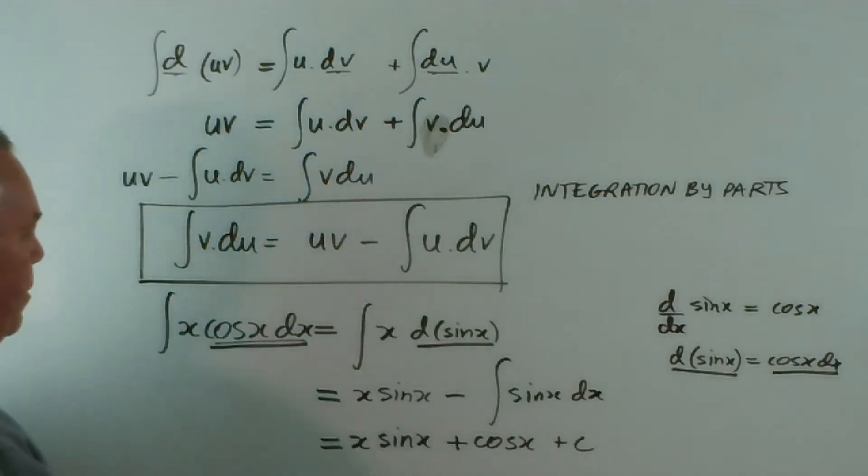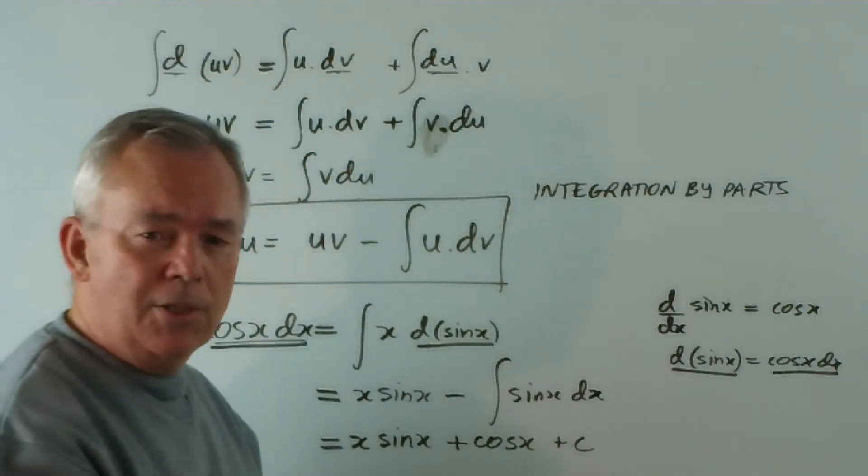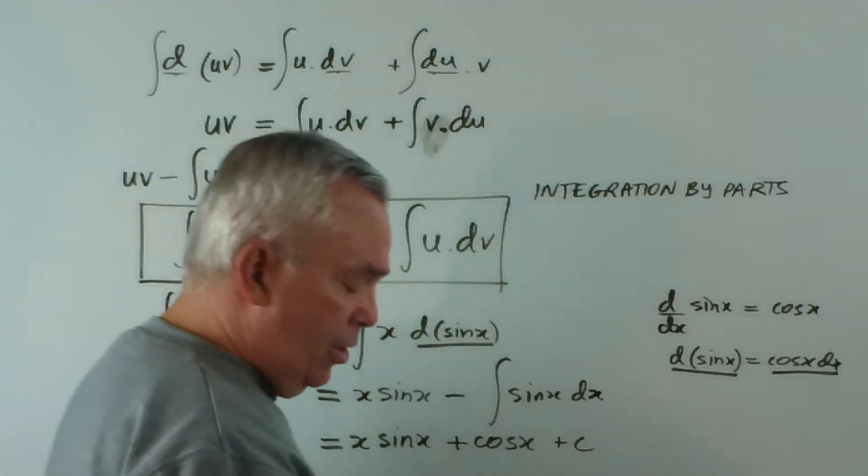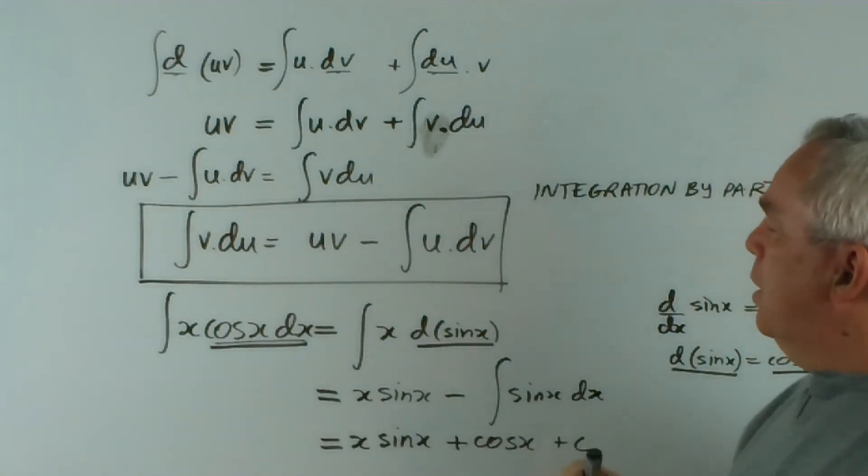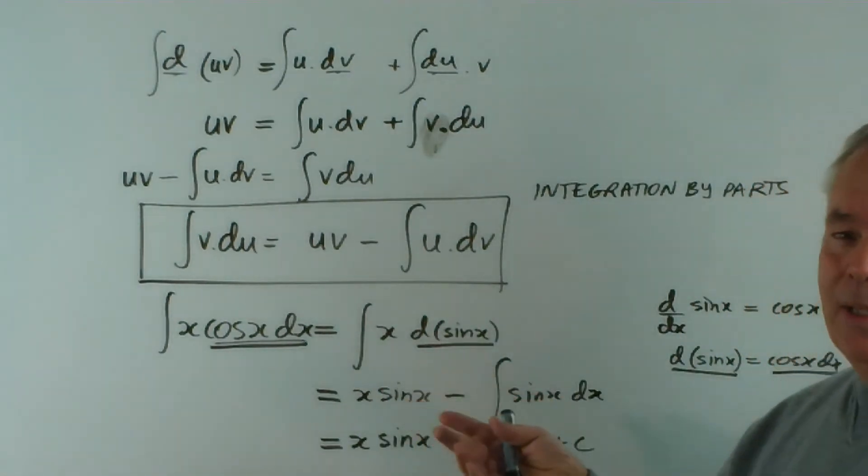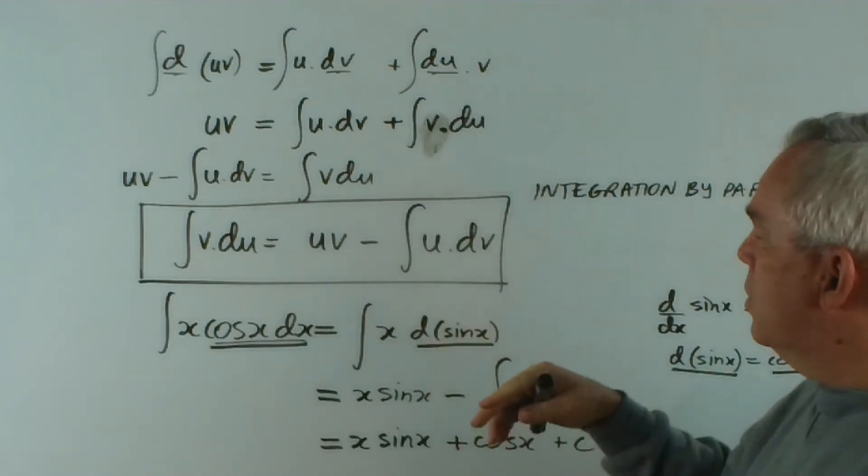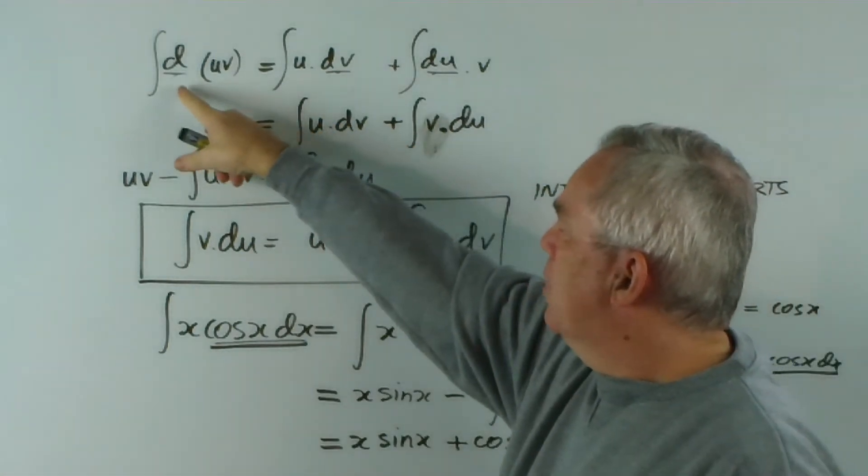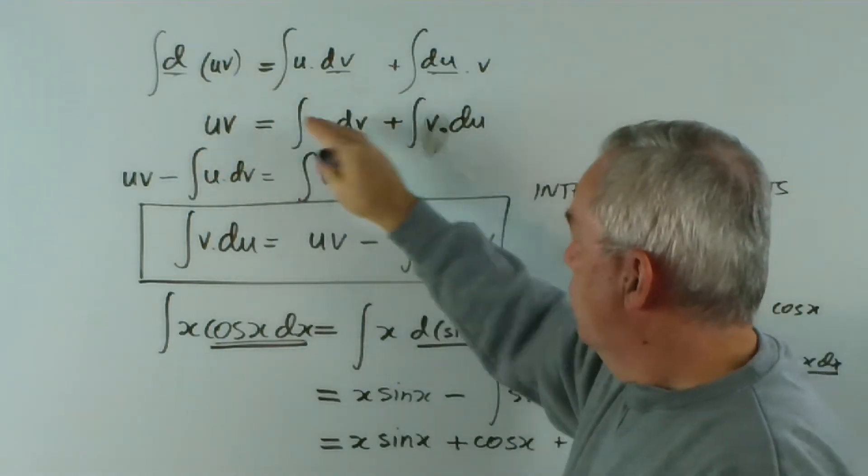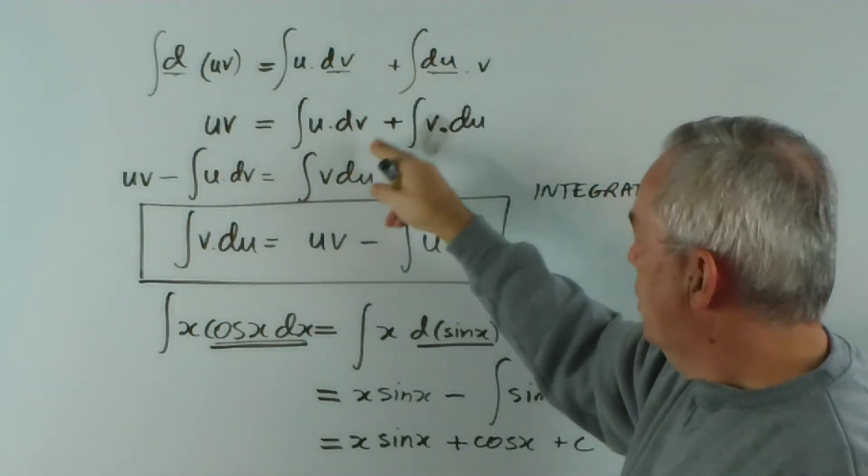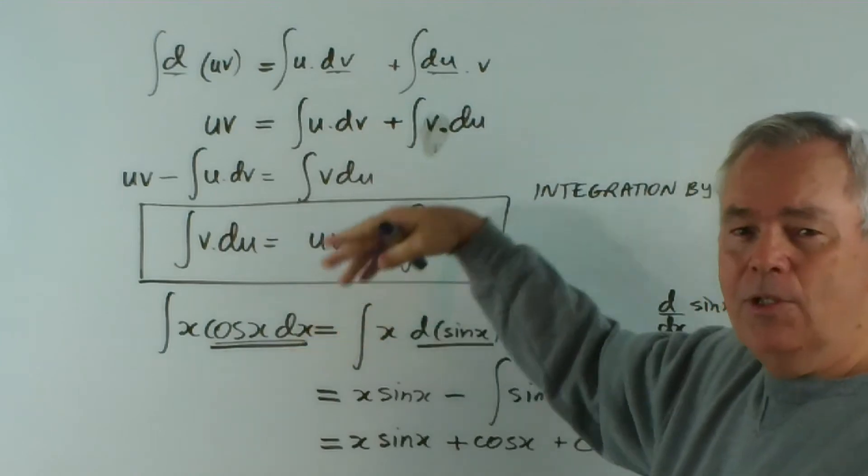But it's based on a reversal of the product rule from differentiation. My recommendation to you, before you get too far involved with this, is that each time you sit down to study this, and probably each afternoon for the next few afternoons, you start by doing exactly what I did. Find the derivative of UV, and rub out the dx's, integrate, and derive this. It's only four or five lines of work. Derive it each time.